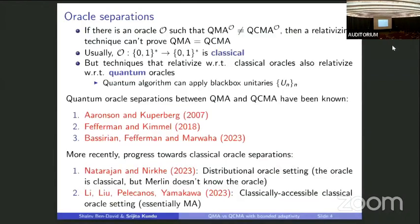The first result was by Natarajan and Neerke last year. They showed a separation between QMA and QCMA in a distributional oracle setting — the oracle is classical but comes from a distribution. Merlin doesn't know the exact oracle but knows the distribution and can send a witness based on the distribution. After that, there was another result by Li, Liu, Pelicanos, and Yamakawa. They showed a separation between QMA and QCMA with respect to a classically accessible classical oracle, meaning the oracle cannot be queried in superposition.